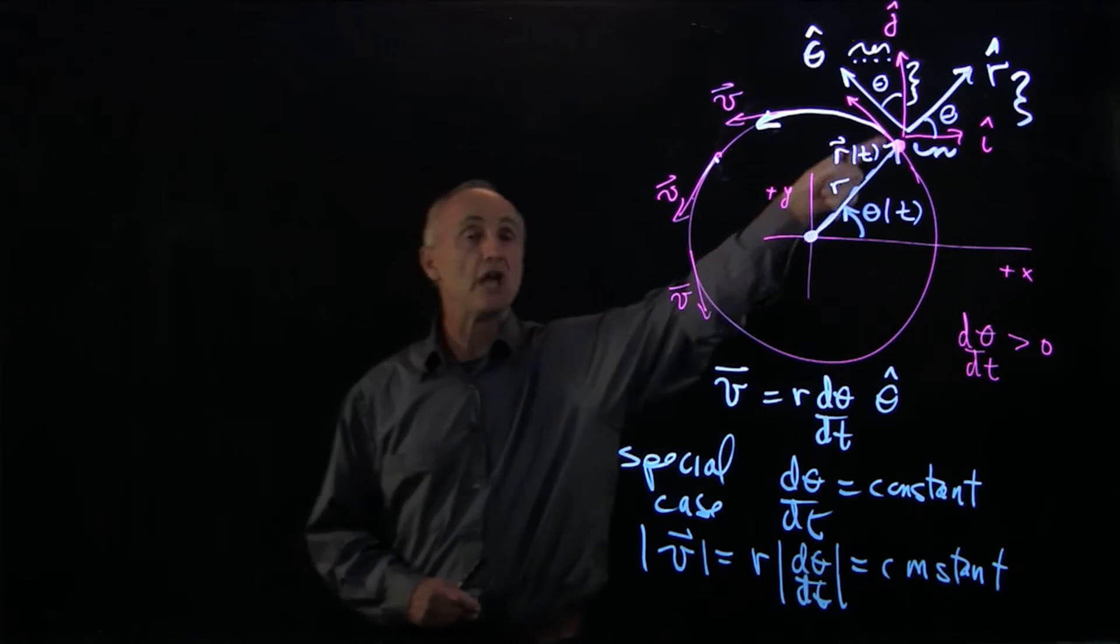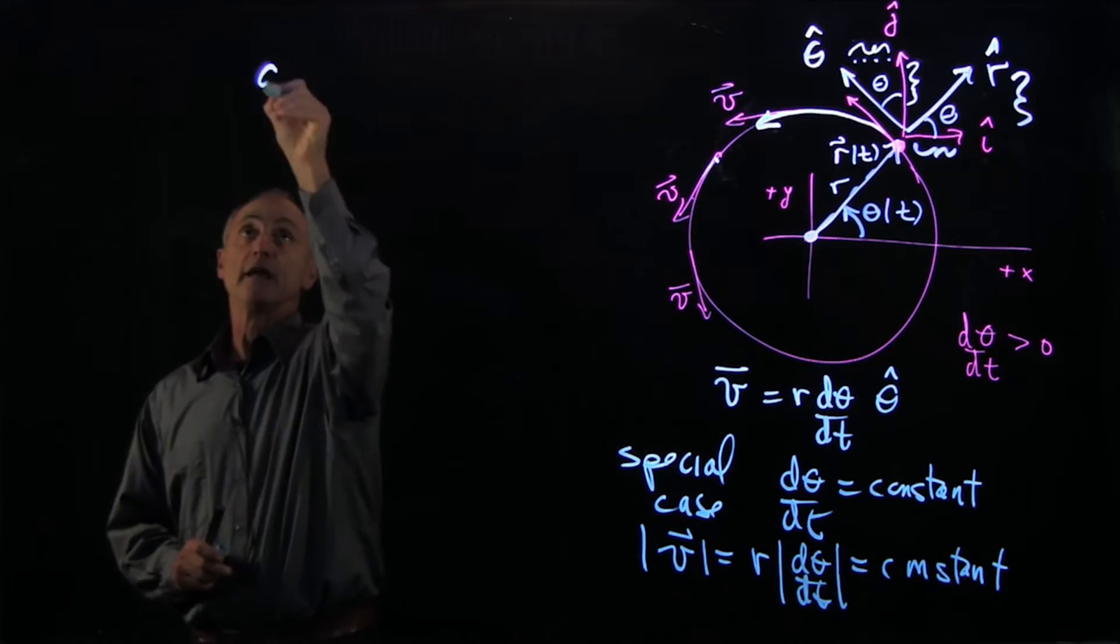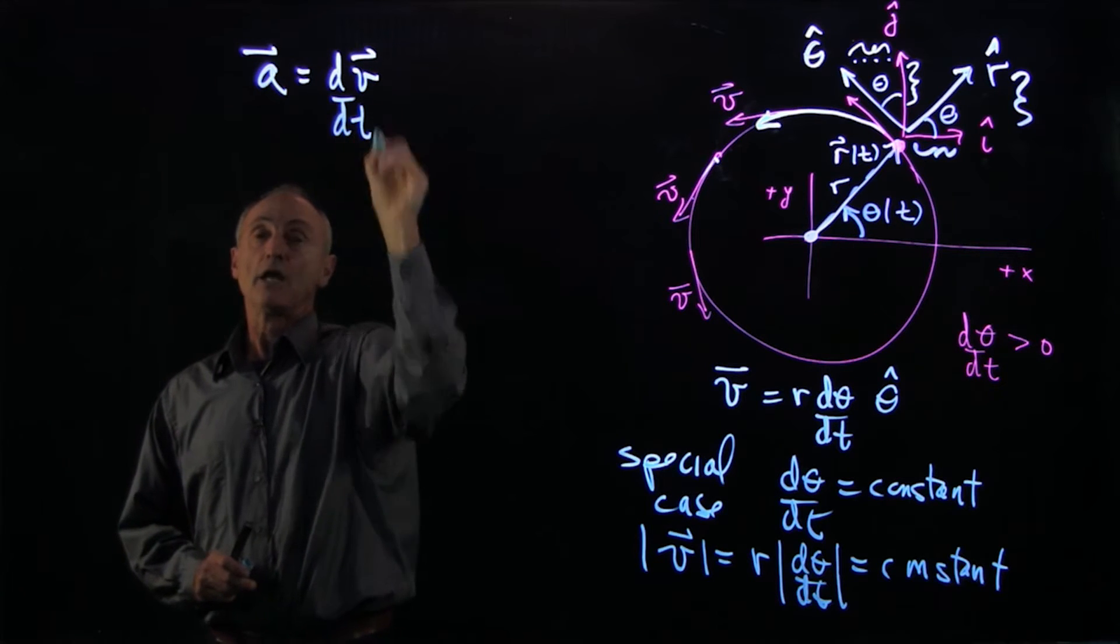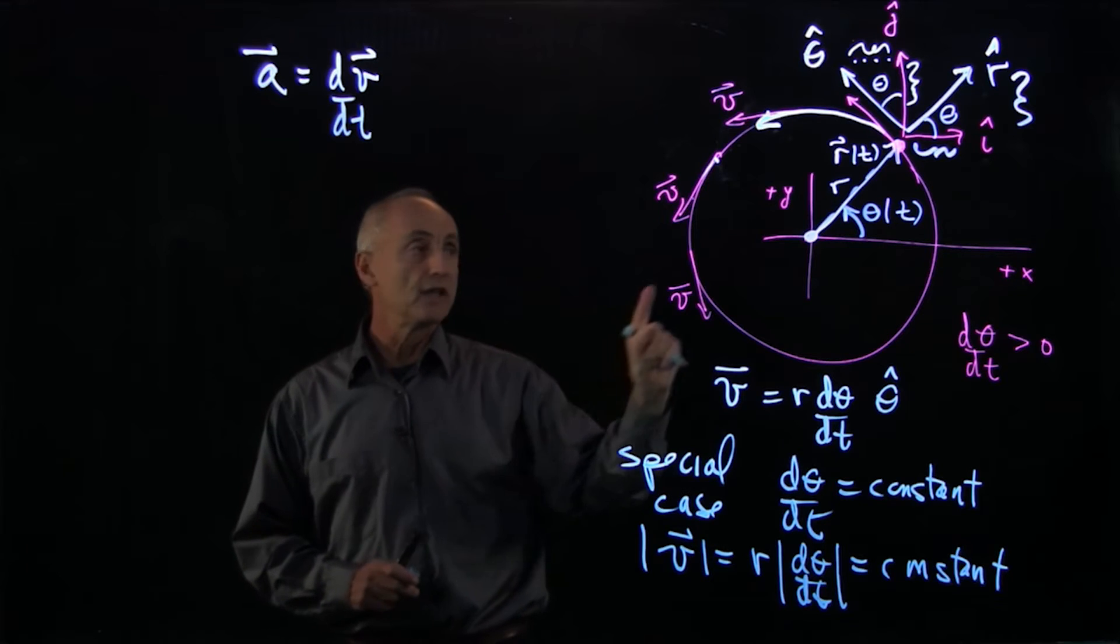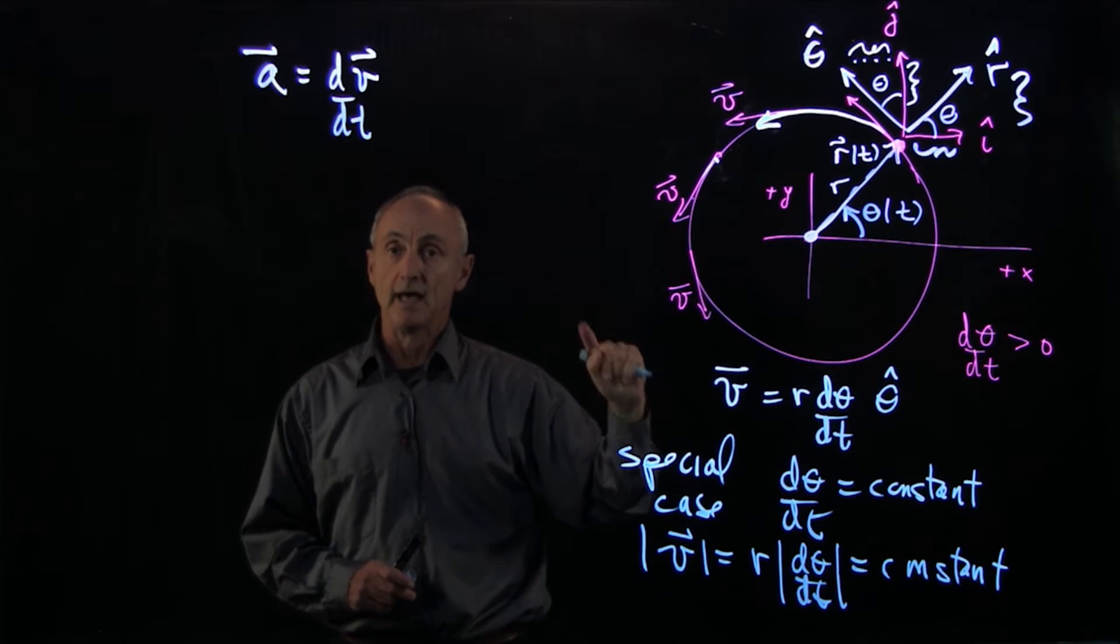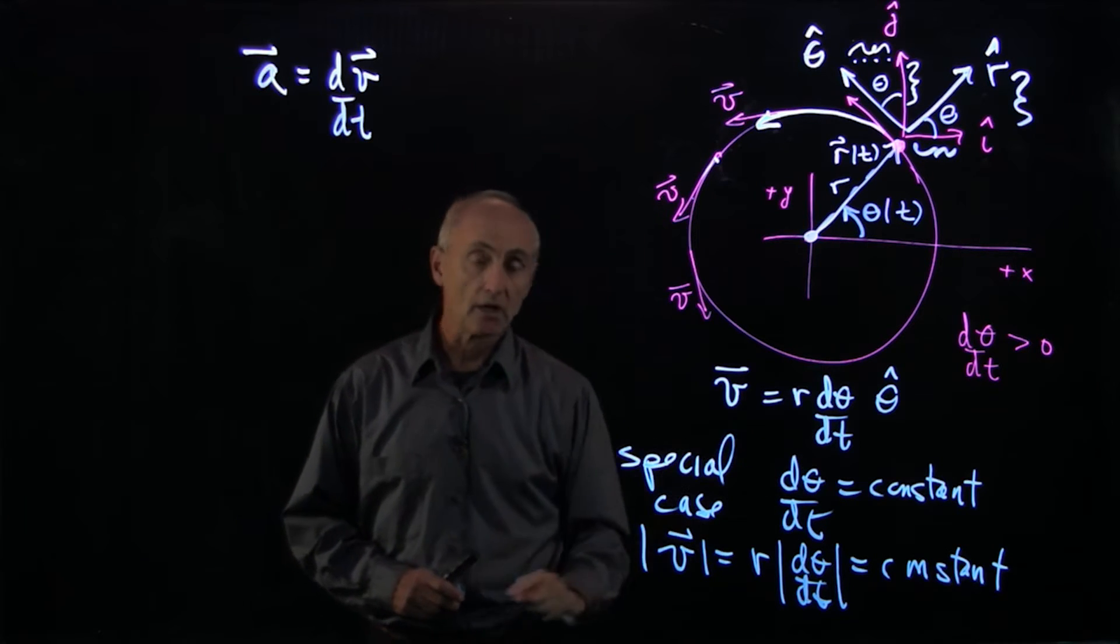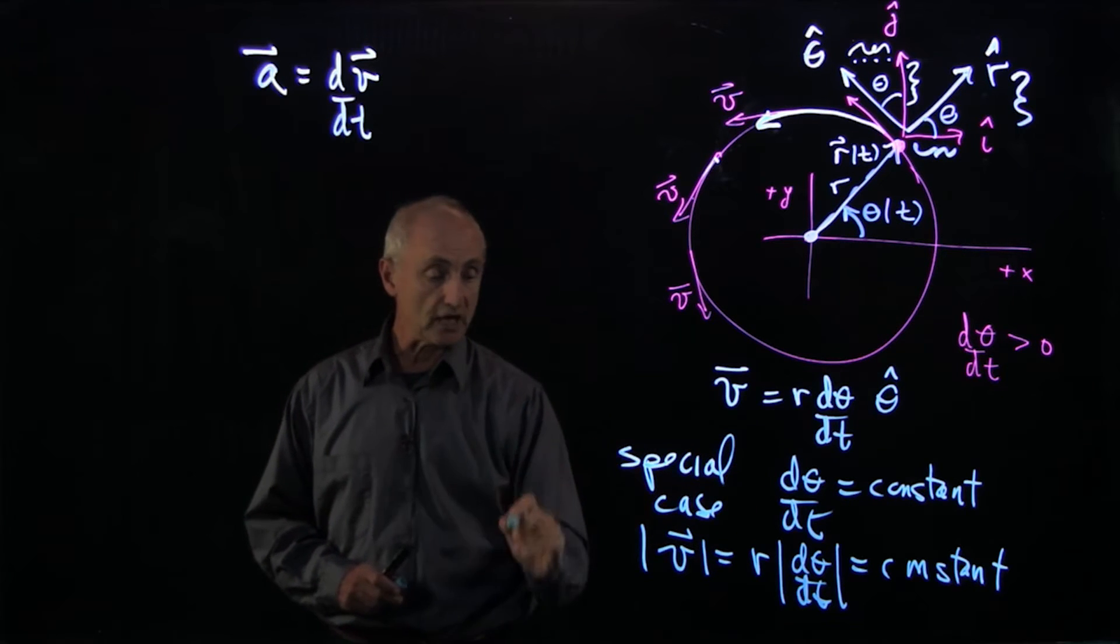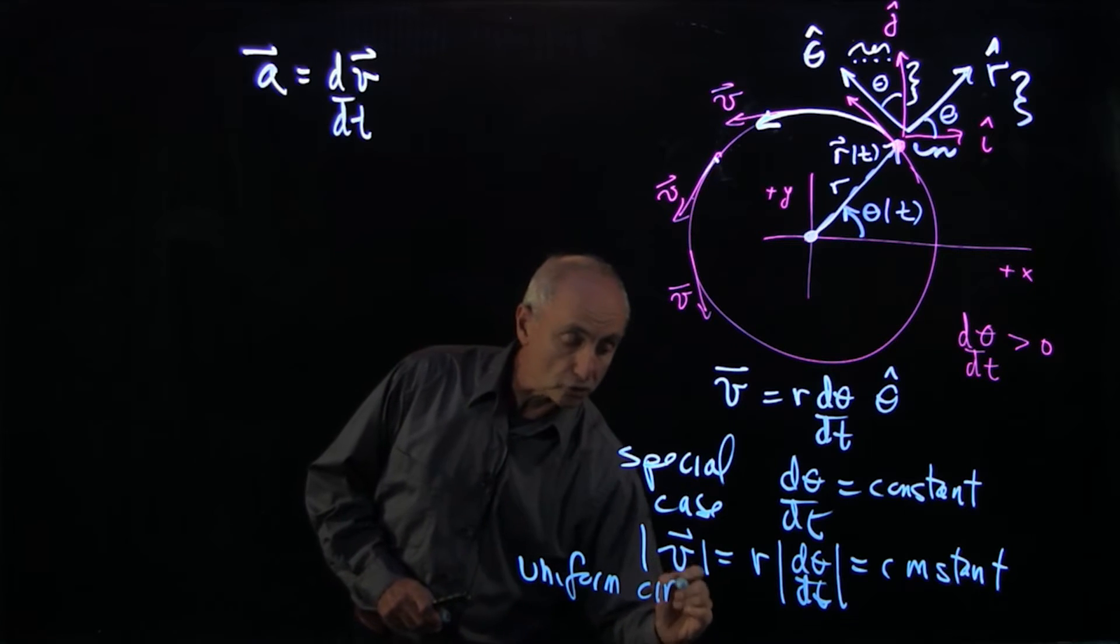But the velocity vector is changing direction. And we know by definition that the acceleration is the derivative of velocity. And so what we see here is where we have a vector that's constant in magnitude but changing direction, and we now want to calculate the derivative in this special case. We refer to this case as uniform circular motion.